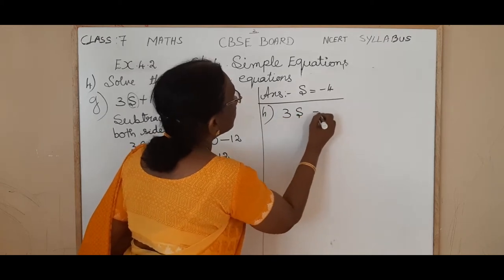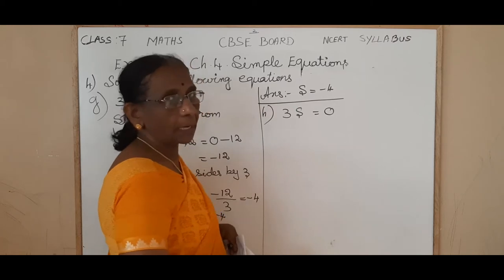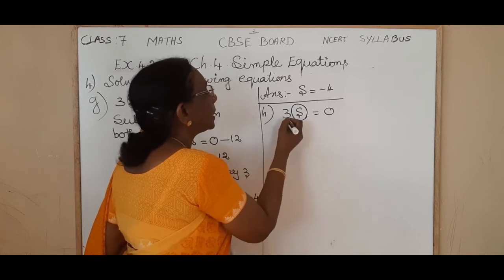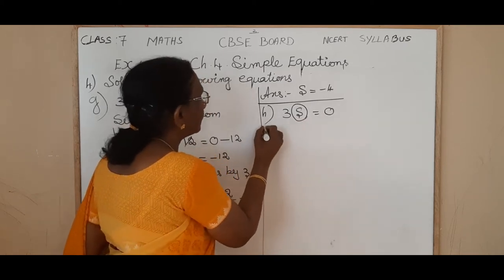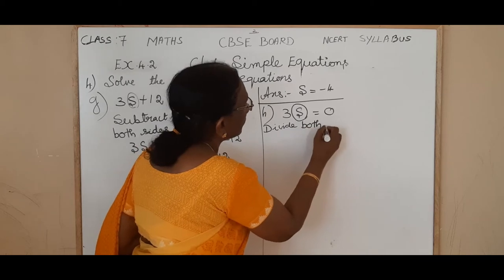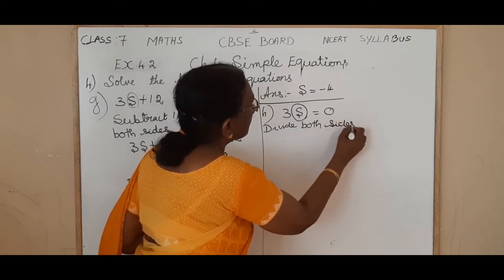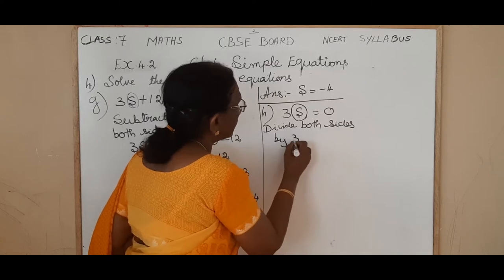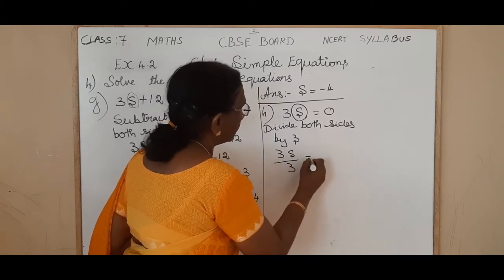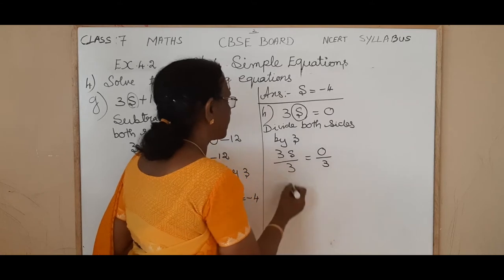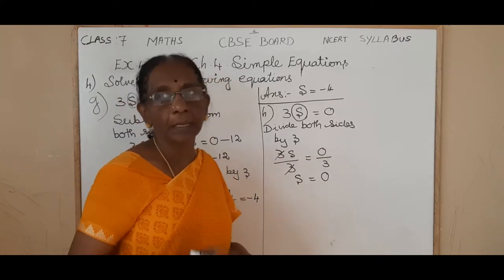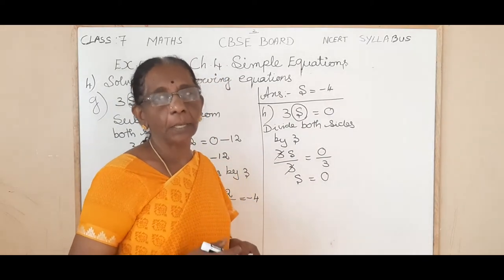Now next: 3s is equal to 0. What should be eliminated from the left hand side? 3. We want only S. So 3 into S — the opposite or inverse operation is division. Divide both sides by 3. So 3s divided by 3 is equal to 0 divided by 3. 3 and 3 gets cancelled, so S is equal to 0. If you divide 0 by any number, the answer will be 0, because 0 means nothing.